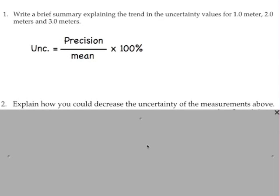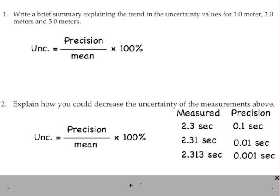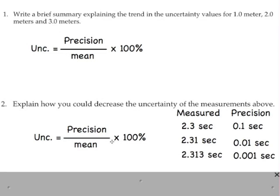Let's take a look at number 2. Explain how you could decrease the uncertainty of the measurements above. And so if you look at this equation, the uncertainty is precision divided by the mean. The mean was beyond your control. You couldn't change that. That was just the numbers you calculated. So what's left is the precision.